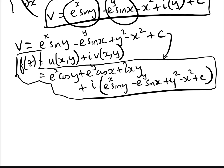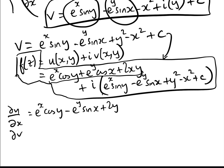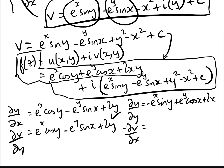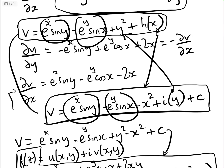Let's verify quickly by checking the Cauchy-Riemann equations. du/dx equals e to the x cos y minus e to the y sin x plus 2y, and dv/dy equals e to the x cos y minus e to the y sin x plus 2y — these agree. Also, du/dy equals minus e to the x sin y plus e to the y cos x plus 2x, and minus dv/dx equals minus e to the x sin y minus e to the y cos x minus 2x — again exactly the same. The Cauchy-Riemann equations hold.